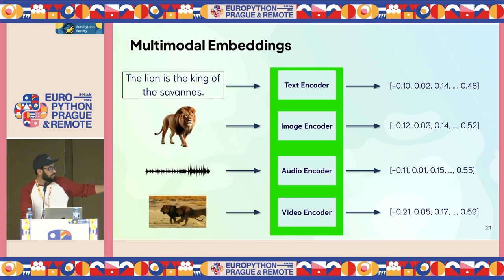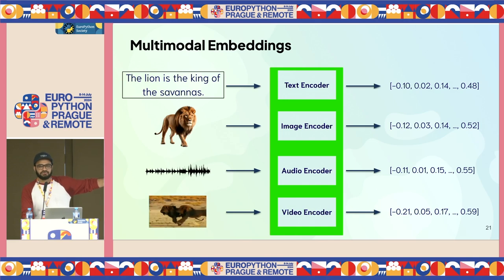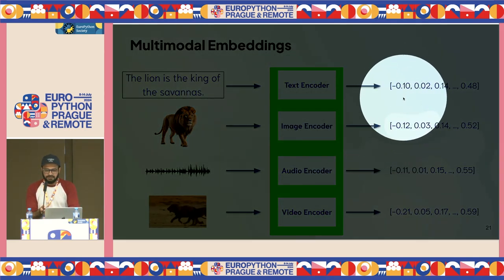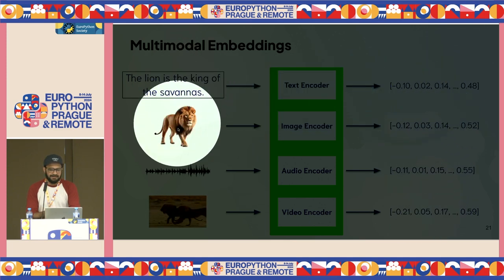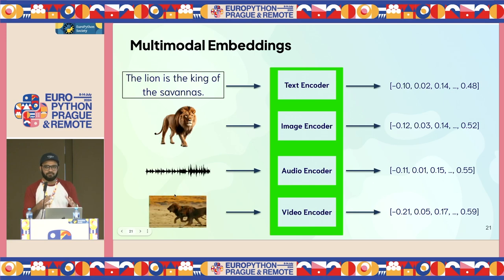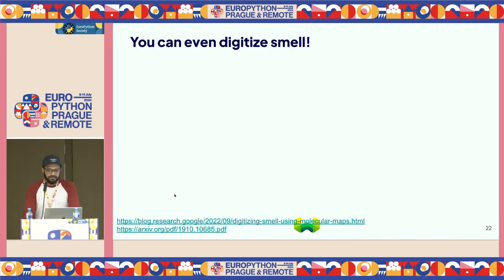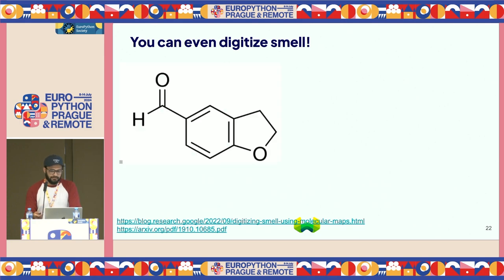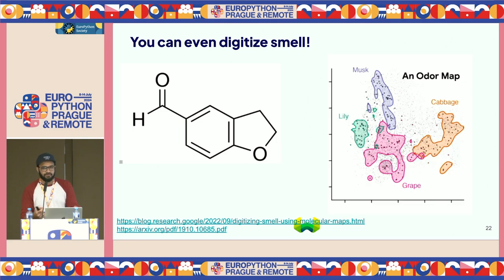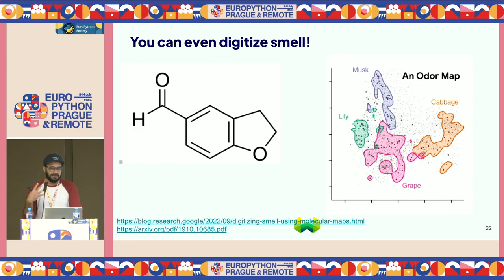Because the original data points are semantically similar — even though the multimedia format is completely different — the projected vectors should also be similar. The vectors are quite similar across dimensions because semantically all of these things are very similar: if they were books in a library, they'd all be in the same location. There's even work being done to digitize smell — from a company that spun out of Google — building an odor map where different molecules can be projected into vector space to understand grapey or musky smells. If you can turn your data into a vector, you can use vector database technology to search over it.